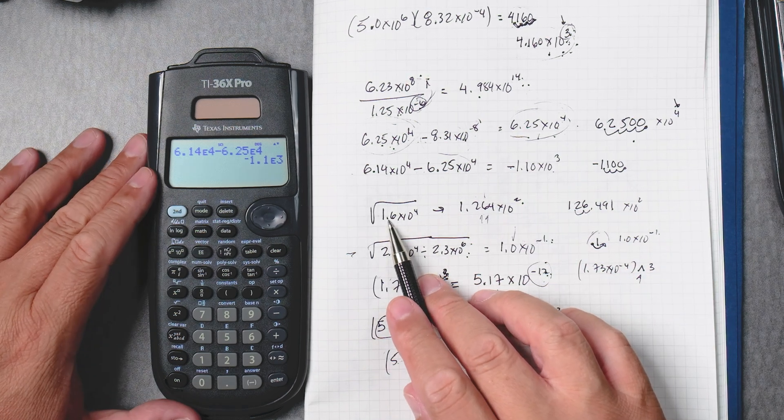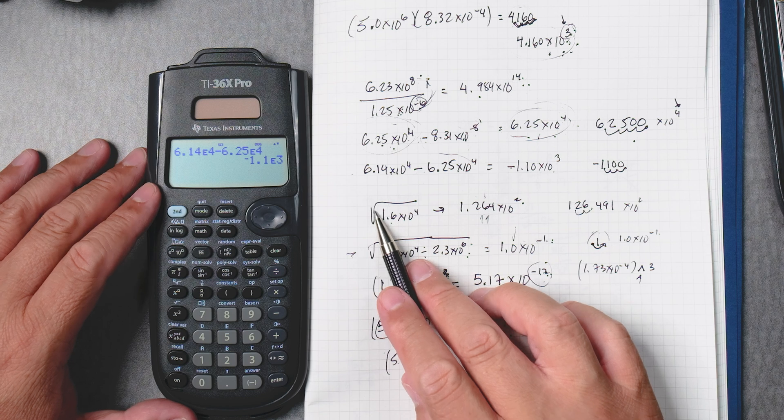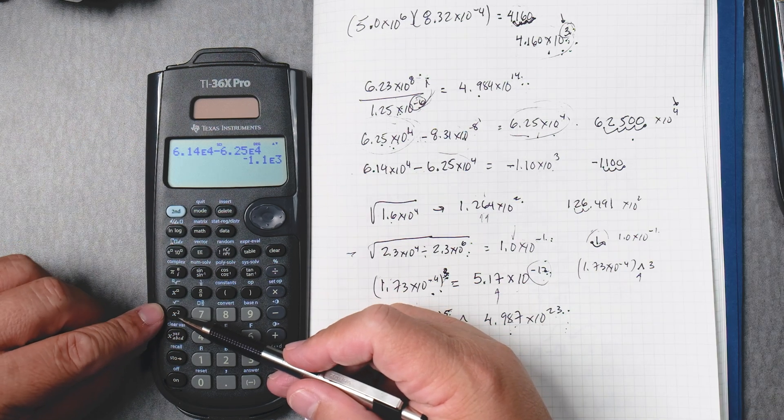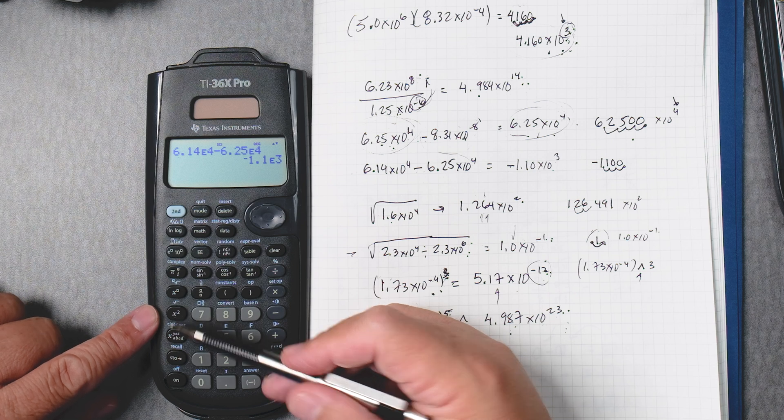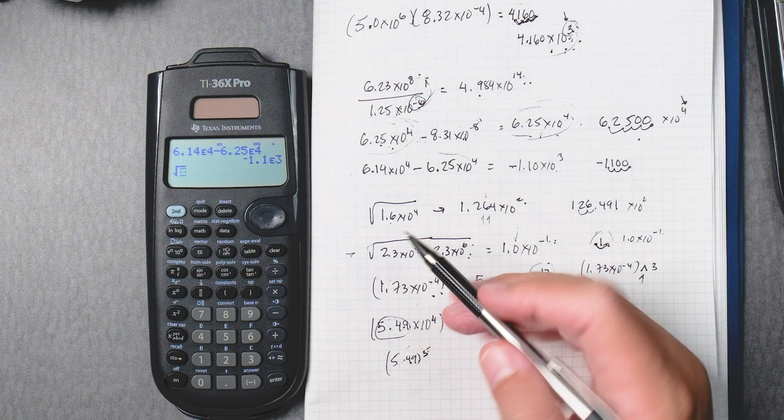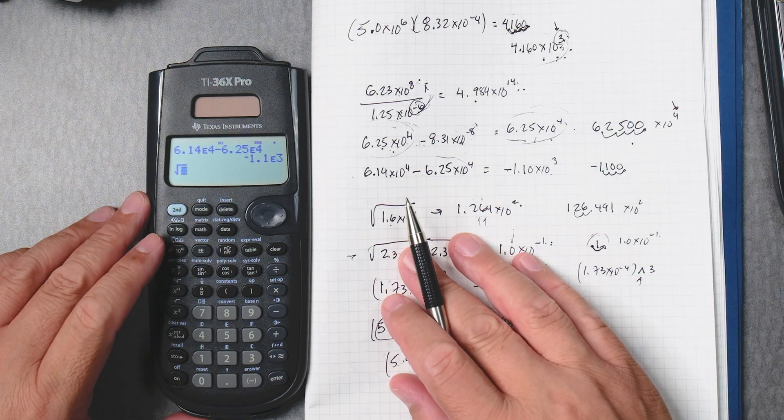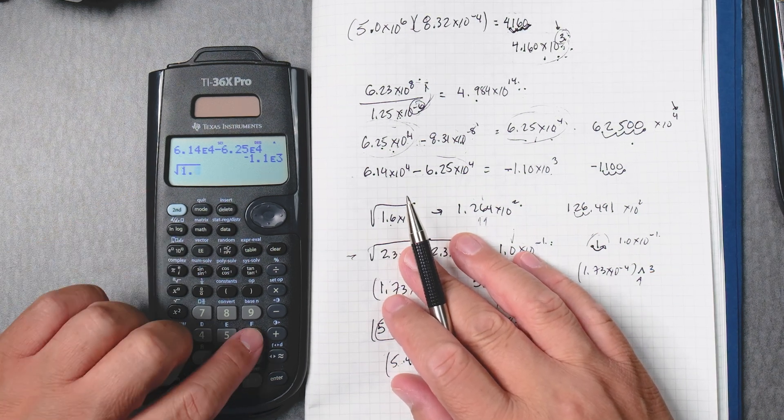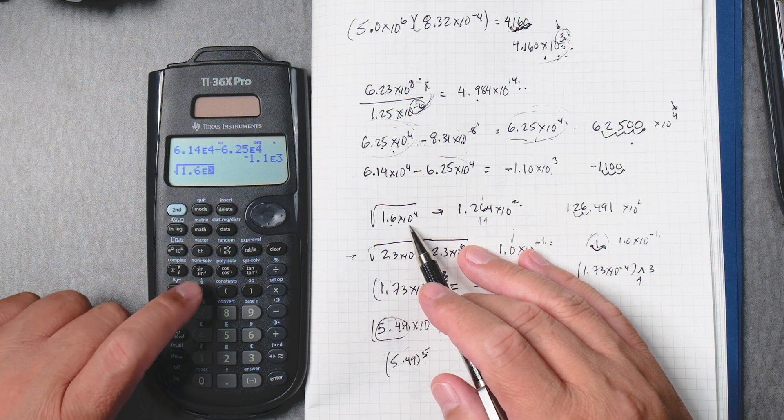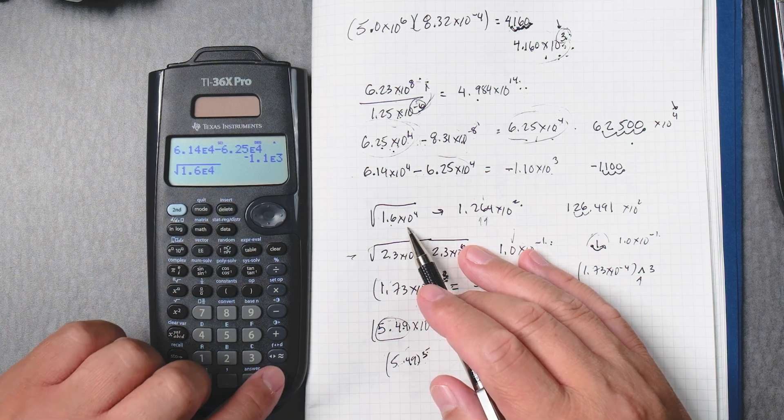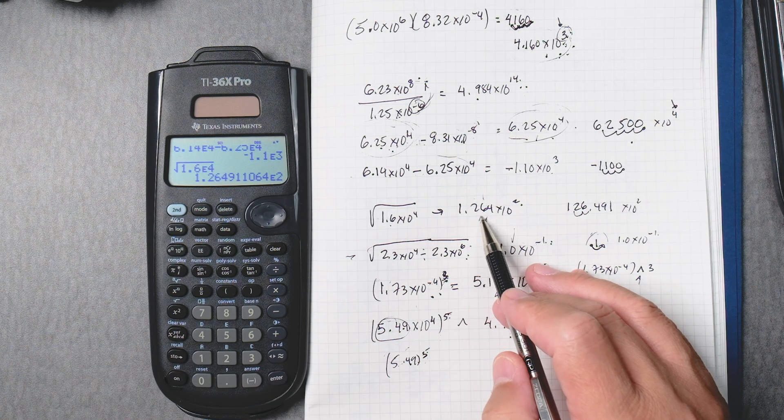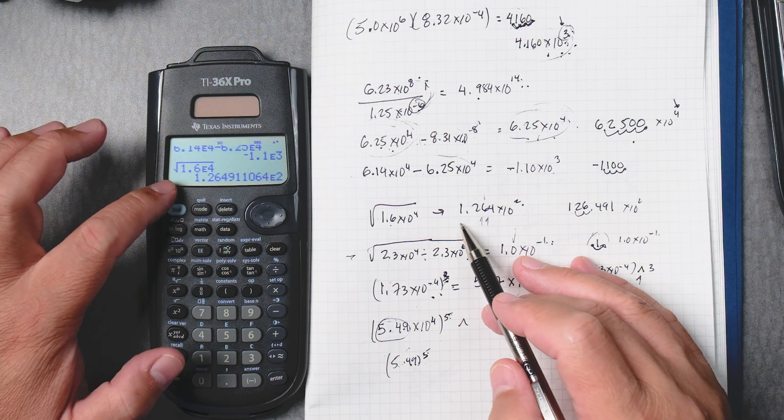Okay, on this one, you're probably going to need to take the square root first. And you can see it here, where the square is. So, second square root, and this is going to be 1.6 to the double E times 10 to the 4, enter. 1.264 times 10 to the second. Perfect.